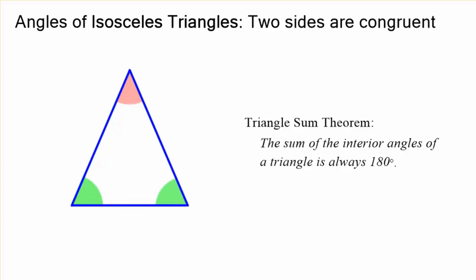When we combine these two ideas, everything will just make sense. Let's say the vertex angle was 40 degrees. How could we determine the other two angles, those two base angles?